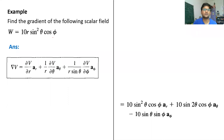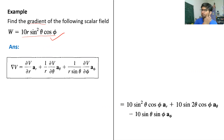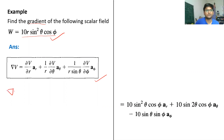In this example, a scalar field is given: W = 10r·sin²(theta)·cos(phi). It is a scalar because no direction is given. Since r, theta, and phi are used, it is written in spherical coordinates. You have to find the gradient of this scalar field, so you apply the gradient formula for spherical coordinates. We put the function into that formula — del W equals del/del-r of (10r·sin²(theta)·cos(phi)) times a_r, plus the other terms.